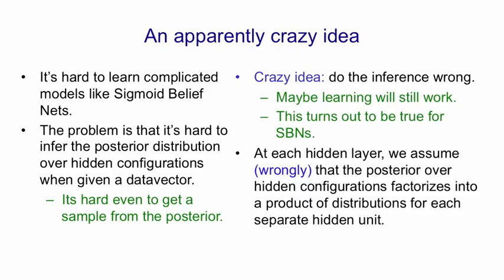So the distribution that we're going to use is a distribution that ignores explaining away. We're going to assume wrongly that the posterior over hidden configurations factorizes into a product of distributions for each separate hidden unit. In other words, we're going to assume that given the data, the units in each hidden layer are independent of one another as they are in a restricted Boltzmann machine. But in a restricted Boltzmann machine, this is correct, whereas in a sigmoid belief net, it's wrong.